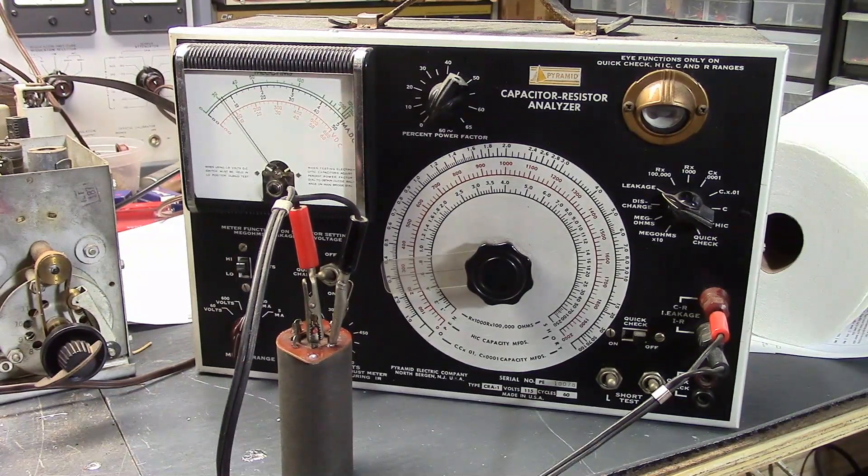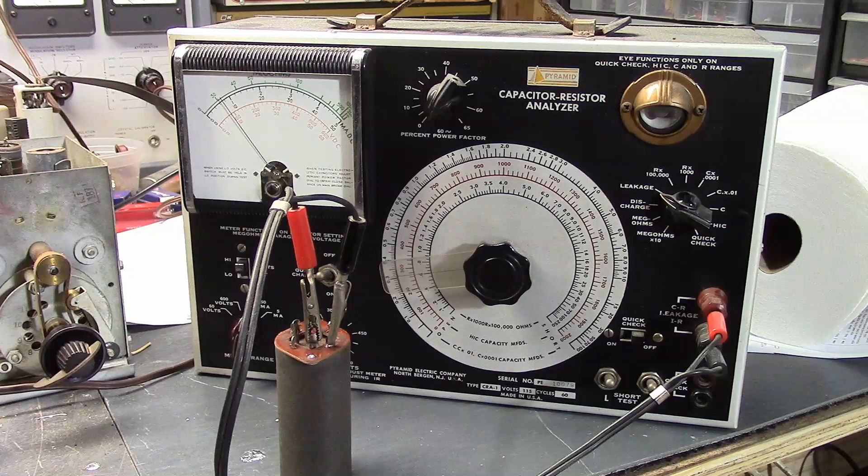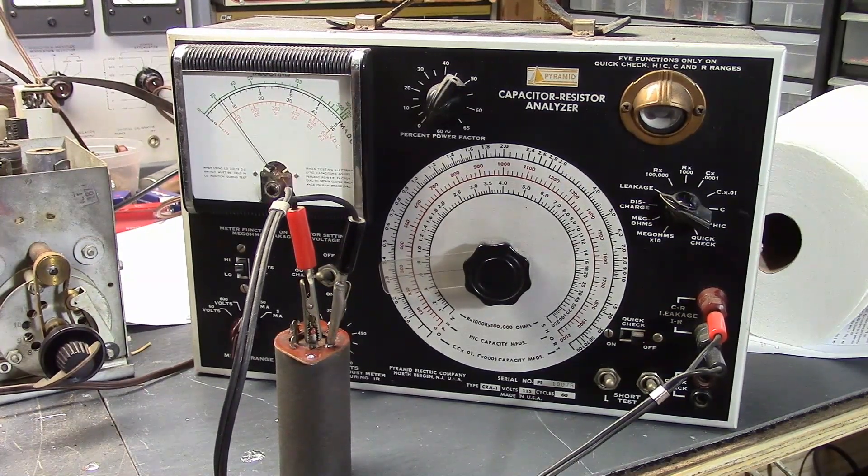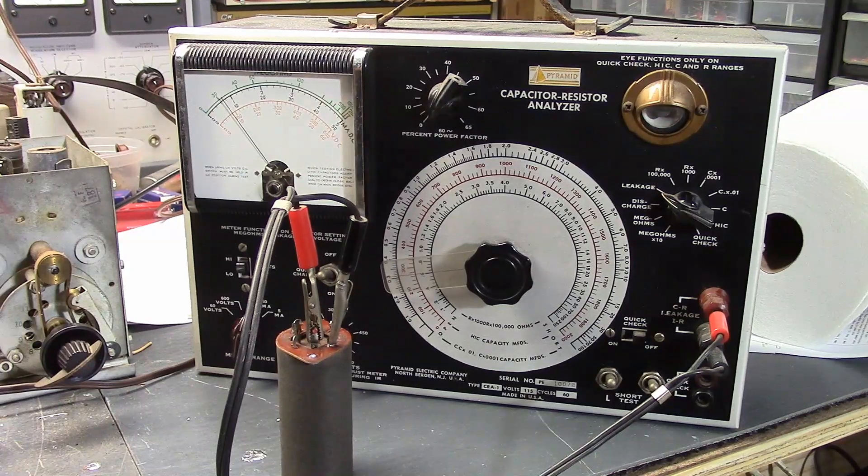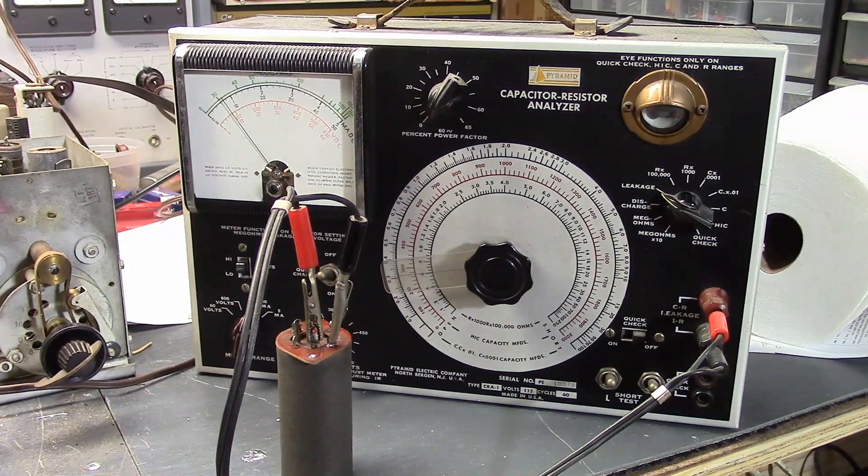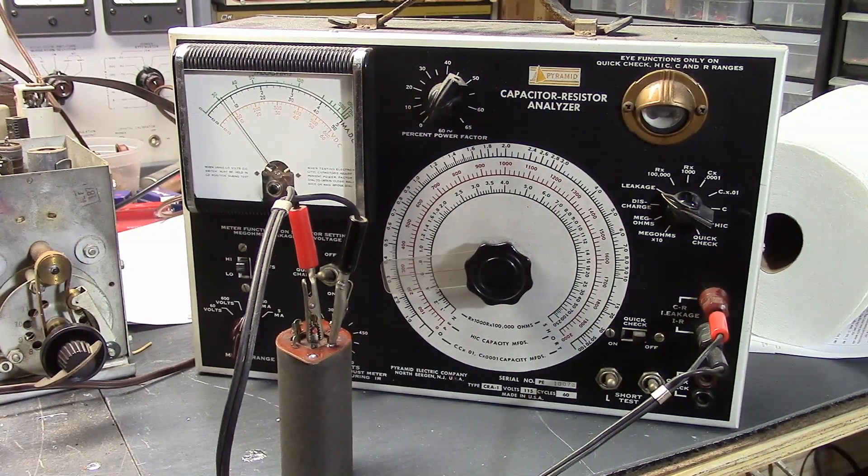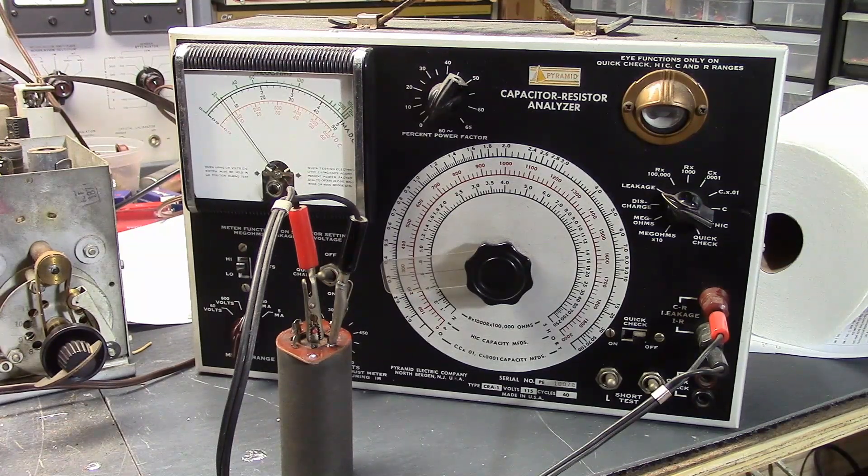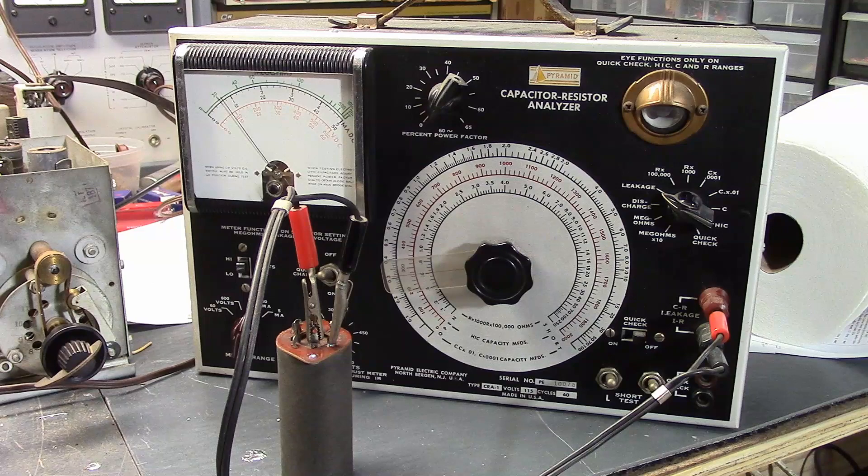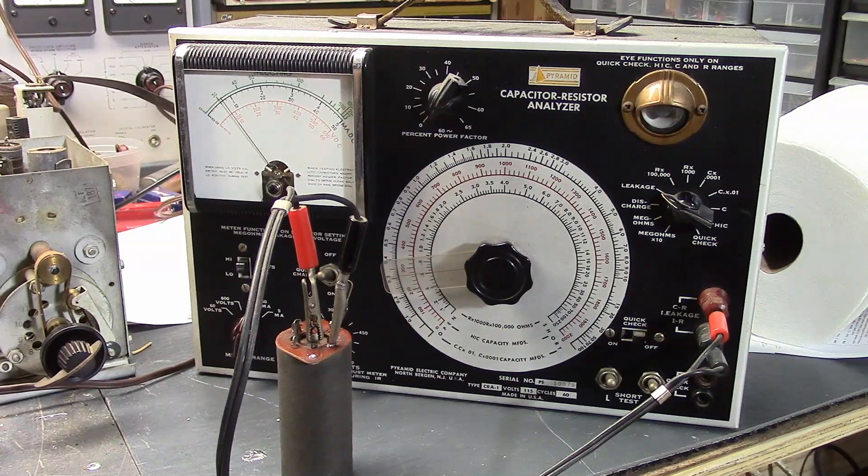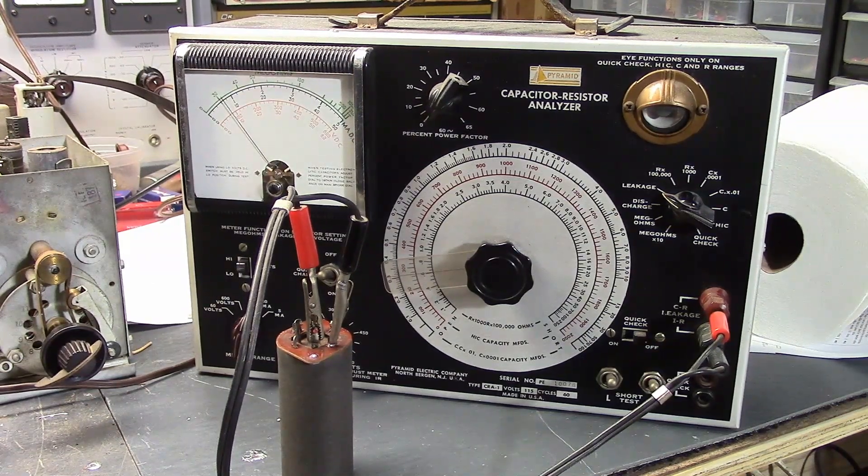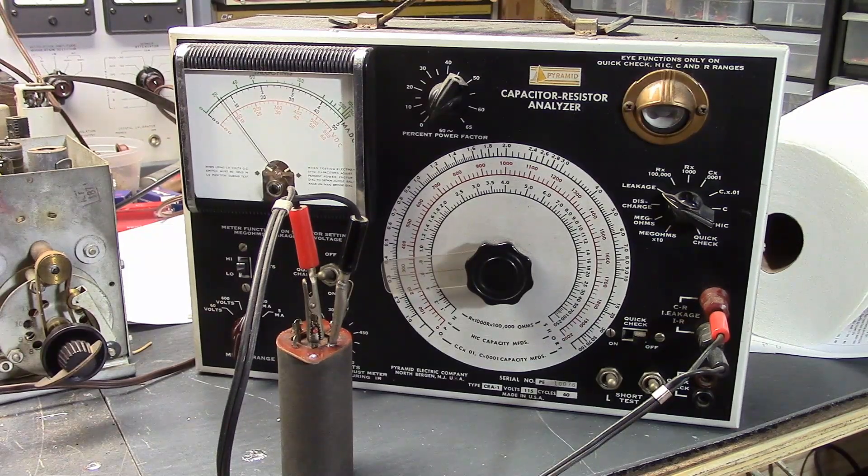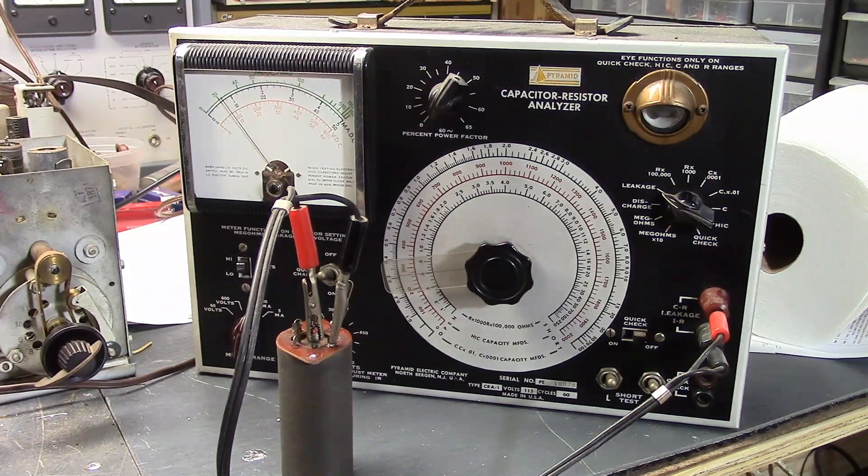So what I'm using as far as what's acceptable leakage current is going by more modern standards, which would certainly be less than 1 milliamp applied at full rated voltage. This is still dropping off, but not as much as it was initially. In other words, I wouldn't trust this capacitor.